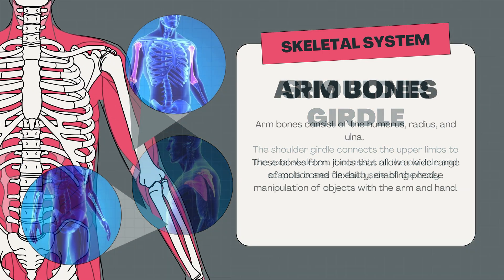The upper leg bones include the femur, or thigh bone, which is the longest and strongest bone in the body. It forms a ball-and-socket joint with the hip bone and the knee joint with the lower leg bones. The patella, or kneecap, connects with the upper and lower leg bones through muscles and ligaments, contributing to knee movement.